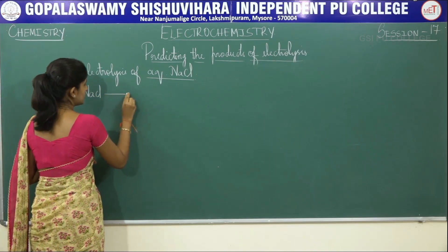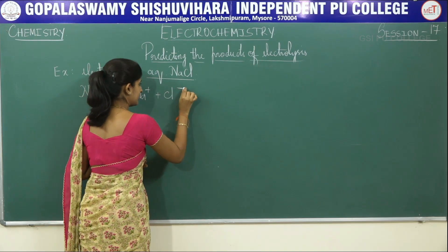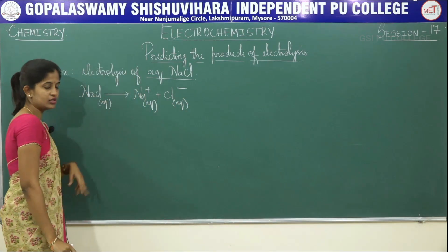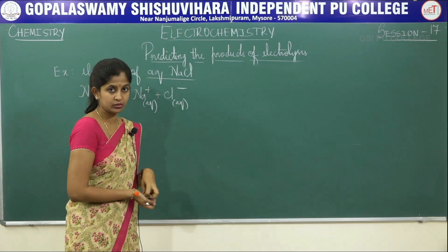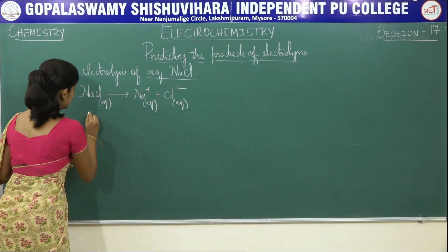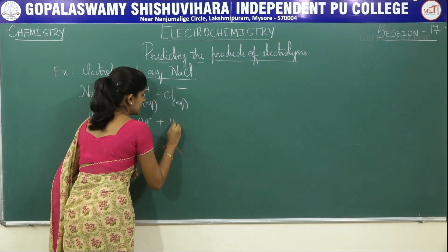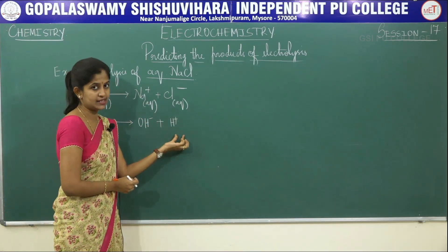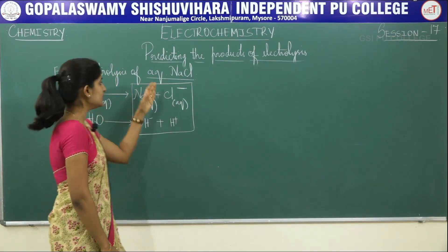First of all, your sodium chloride dissociates into Na+ plus Cl-. These are two species present in your electrolyte. Even water has the capacity to dissociate slightly into its respective ions: H2O dissociates into OH- plus H+. So even water has a slight dissociation into OH- and H+. As a result, you can observe there are four species present which can be electrolyzed in this cell.